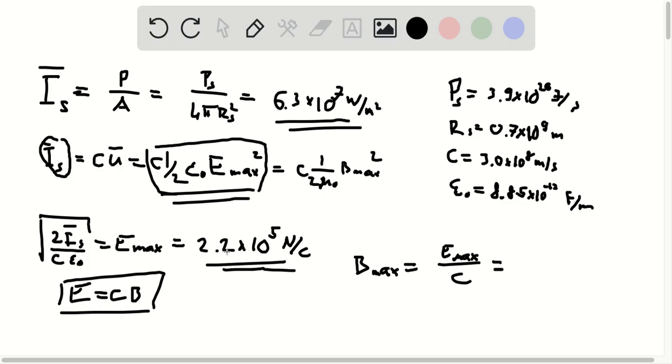And so again, putting 2.2 times 10 to the 5 newtons per coulomb for the E max, and 3 times 10 to the 8 meters per second for the speed of light, we find that the amplitude of the magnetic field is roughly 7.3 times 10 to the minus 4 tesla.